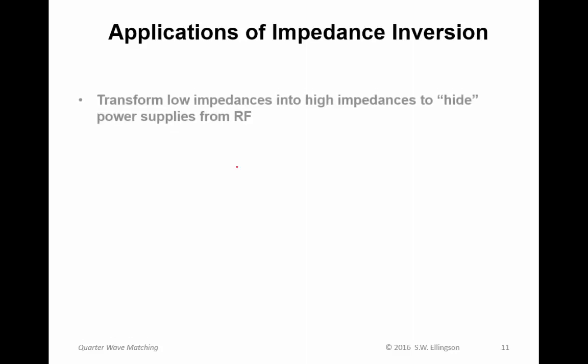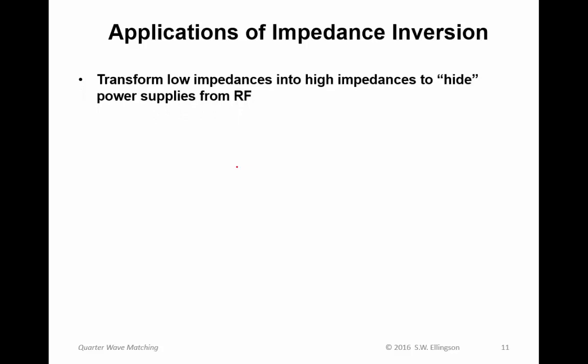Now, some applications of this idea, impedance inversion. You can use this idea to transform low impedances into high impedances. And where this comes in, in RF engineering, in radio engineering, is when you need to hide a power supply. So, let me show you what goes on there. Oftentimes, you have some device, here's a generic symbol for an amplifier, and it has to be powered from a DC power supply. And the only way you can get the power supply into the device is through the output. It turns out that power supplies tend to have relatively low impedance inputs. So, this power supply will load the output of that amplifier if you just directly connect it.